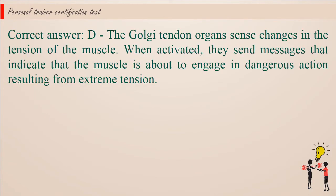Correct answer d. The Golgi tendon organs sense changes in the tension of the muscle. When activated, they send messages that indicate that the muscle is about to engage in dangerous action resulting from extreme tension.